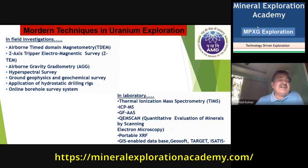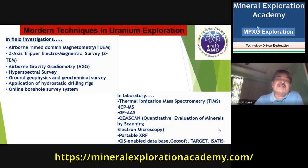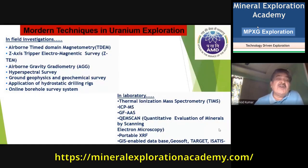Some modern techniques now being used for uranium exploration include airborne time-domain electromagnetics (TDM), airborne gravity gradiometry, and hyperspectral surveys. In the laboratory, TIMS, ICP-MS, spectrographic techniques, graphite furnace AAS, QEMSCAN, and electron microscopy are also used. These are the techniques from which we gather information about the presence of uranium, its grade, and through drilling, its shape, size, and volume.